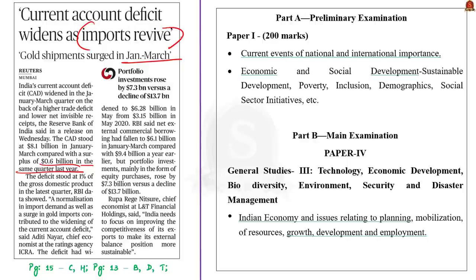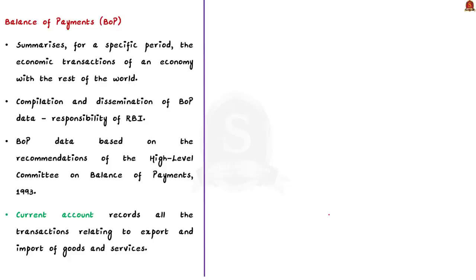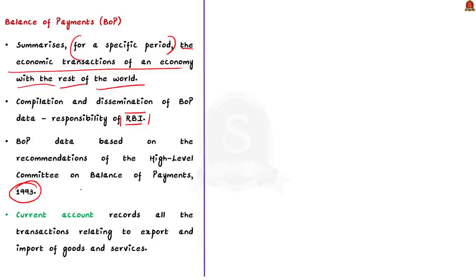In this context, let us understand basic economic terms like balance of payments and its components. Balance of payments summarizes the economic transactions of an economy with the rest of the world for a specific period. The compilation and dissemination of BOP data in India is the primary responsibility of the Reserve Bank of India. The presentation of BOP data since liberalization — that is since 1990-91 — is based on the recommendations of a high-level committee on balance of payments, 1993.